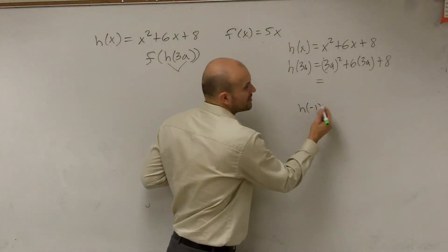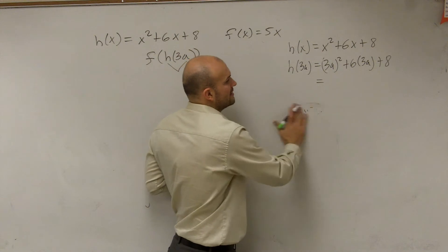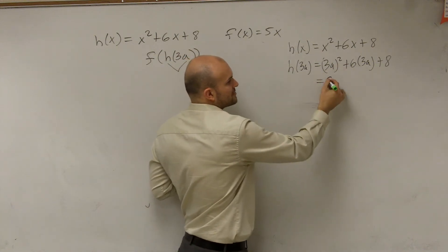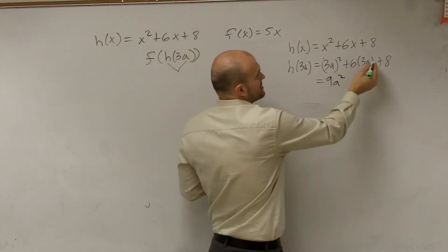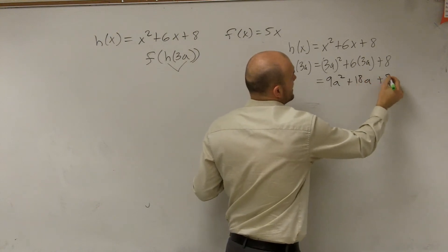If I did h of negative 1, you just plug the negative 1 in for the x. Now I'm just doing a 3a. Well, 3a squared is 9a squared. 6 times 3a is 18a plus 8.